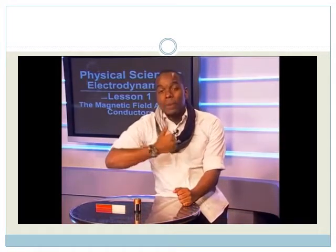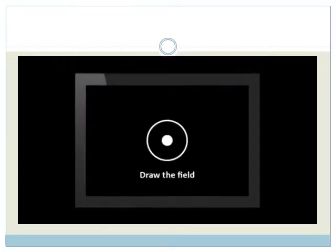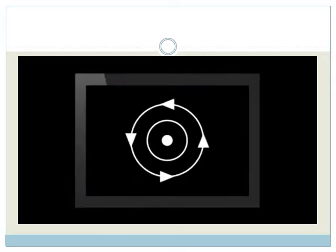When we use a dot, the current is coming towards us, like this. Try to draw these with me and practice drawing the field around the wires in the pictures. Can you see? When there is a dot, the field flows anti-clockwise.